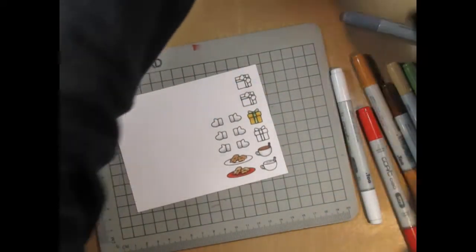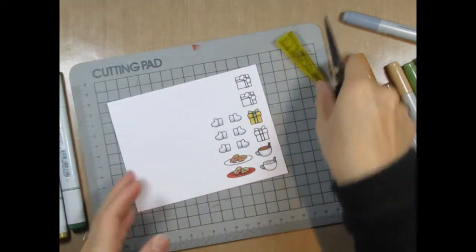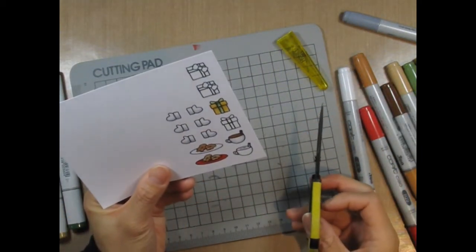So now that everything is colored, I'm going to trim off the paper and then fussy cut each little element.